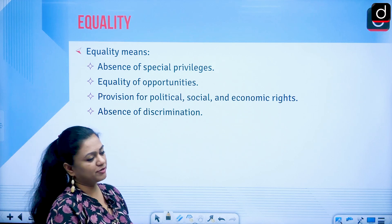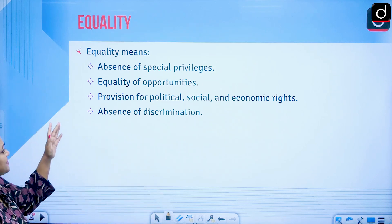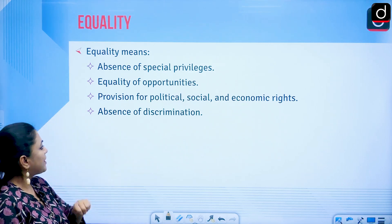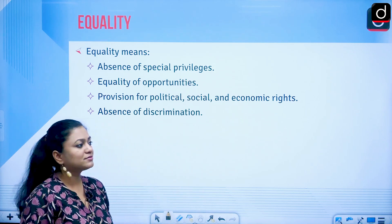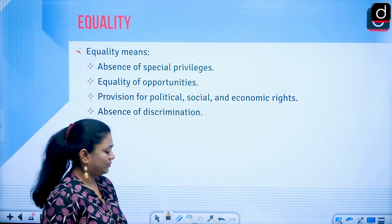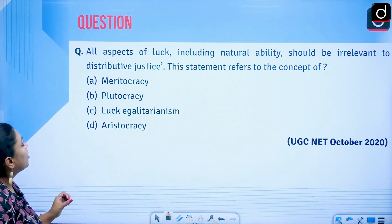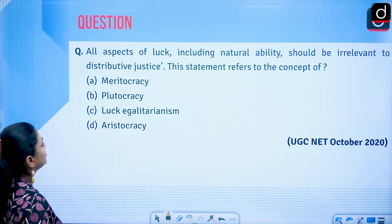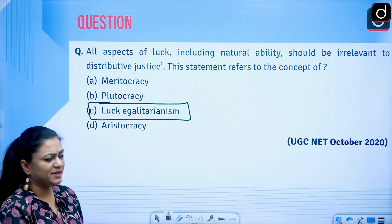After liberty, we discuss equality. Equality involves absence of special privileges, equality of opportunities, provision for political, social, and economic rights, and absence of discrimination — all 100 people are to be treated equally regardless of gender, race, caste, or class. A question from October 2020 UGC NET: 'All aspects of luck including natural ability should be irrelevant to distributive justice' — this refers to luck egalitarianism, a concept propounded by Ronald Dworkin.